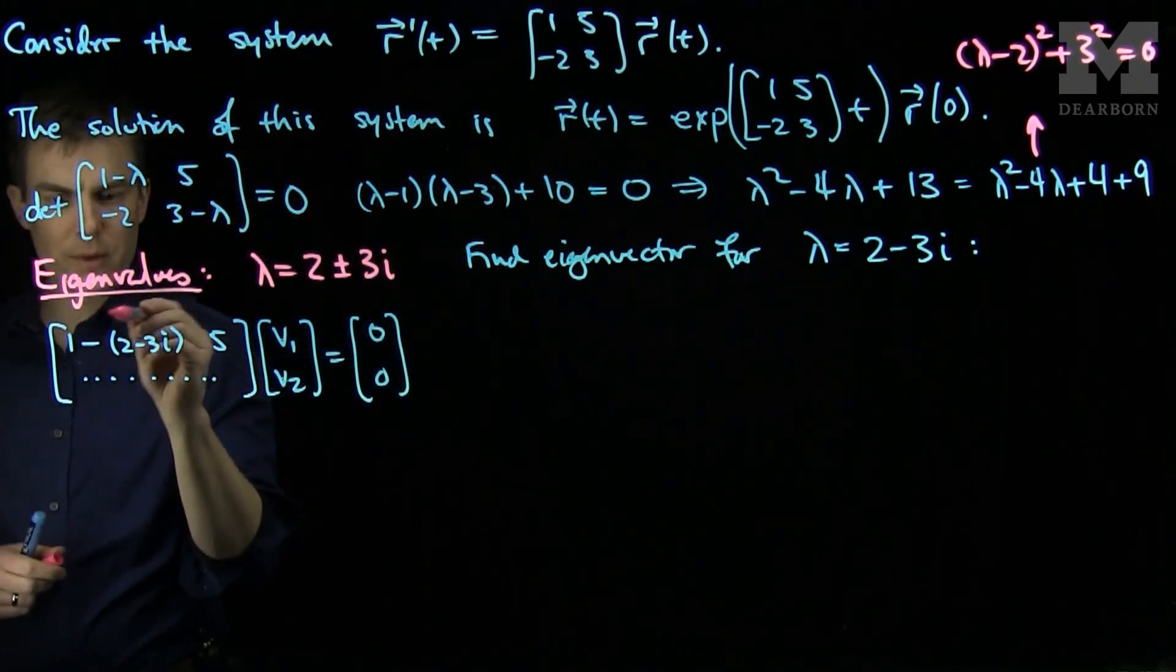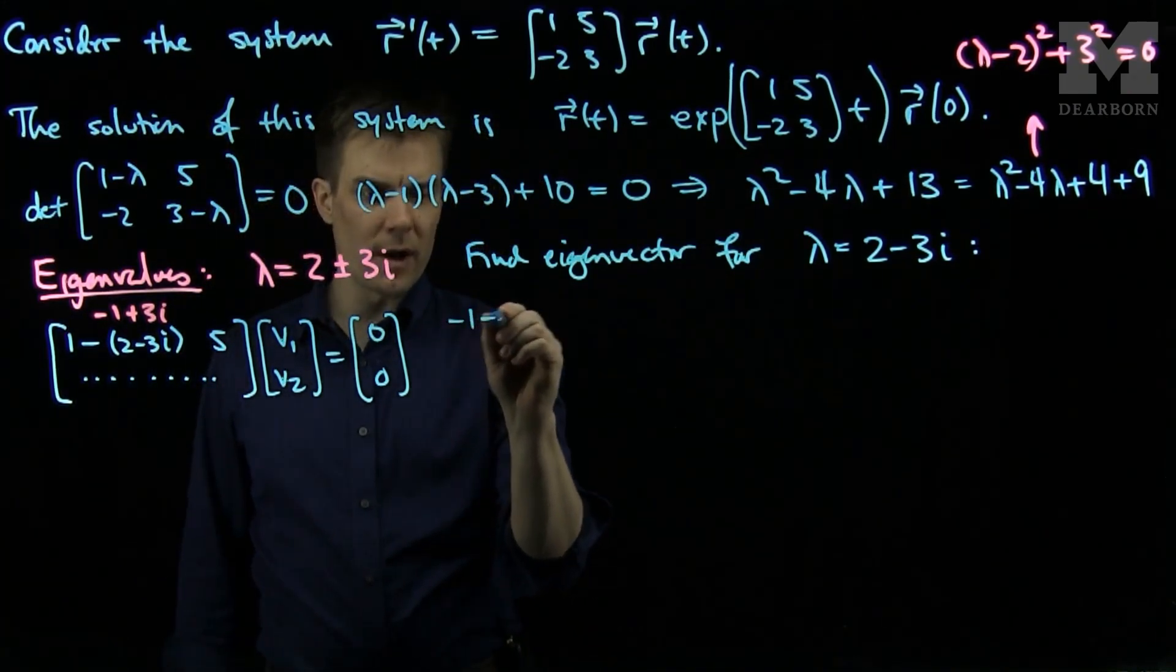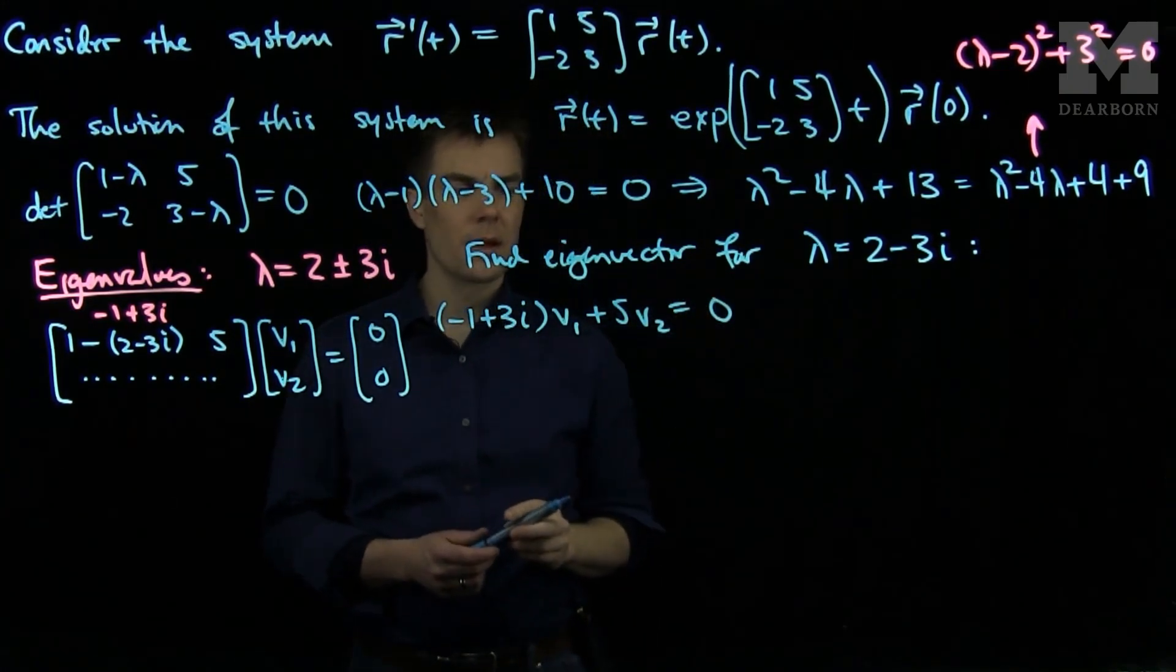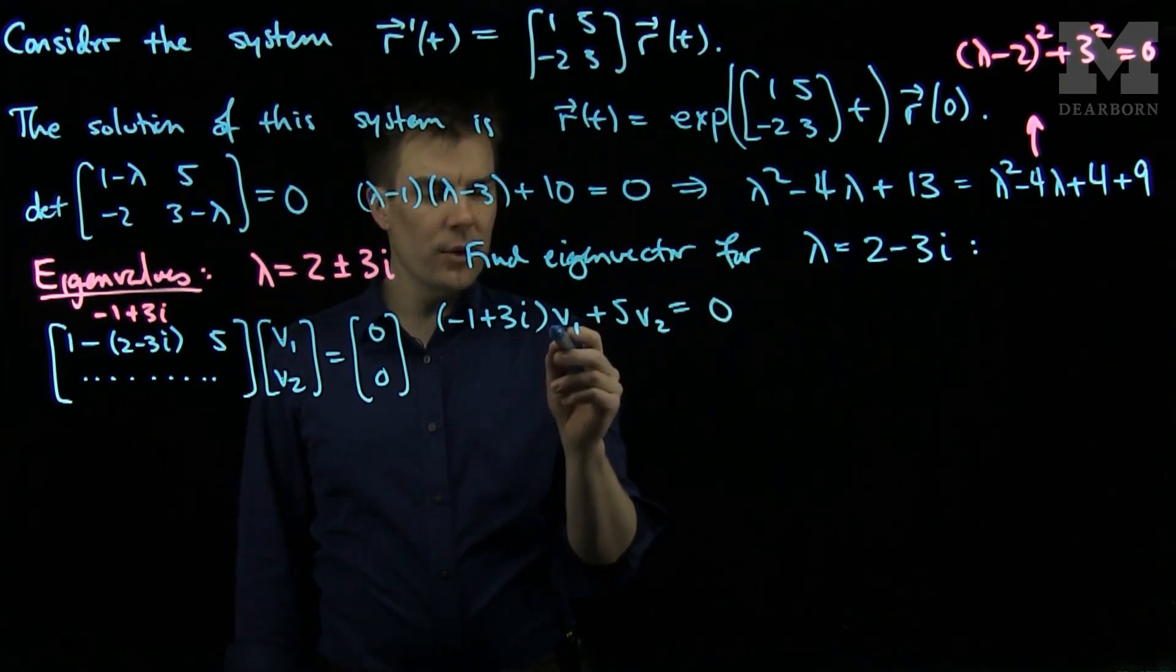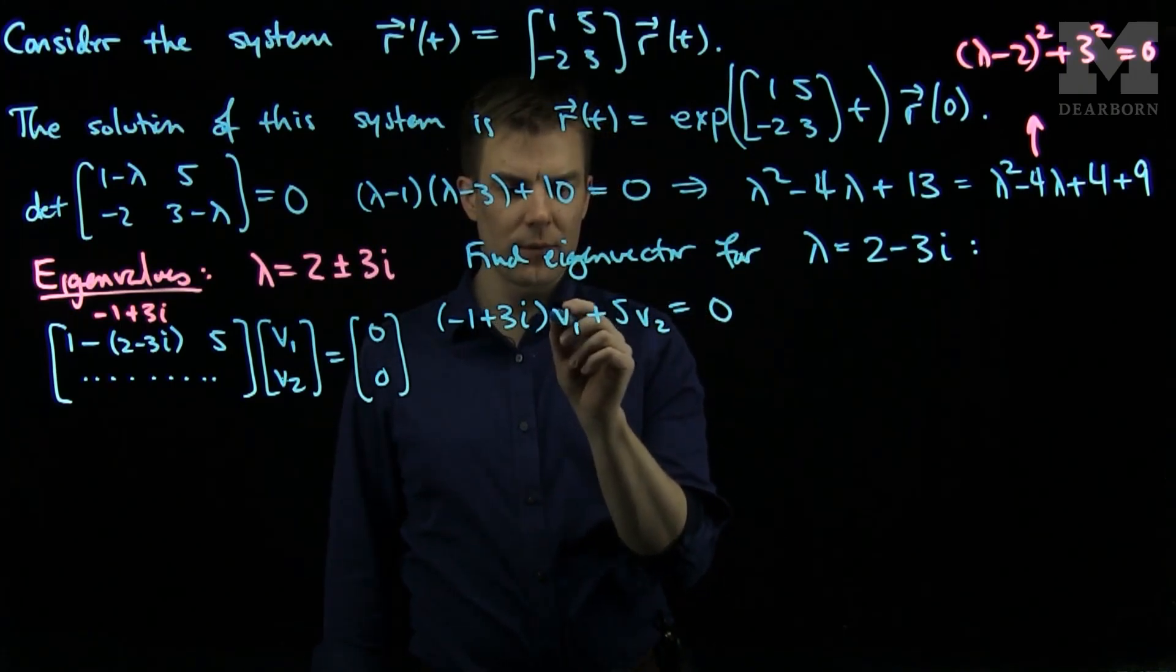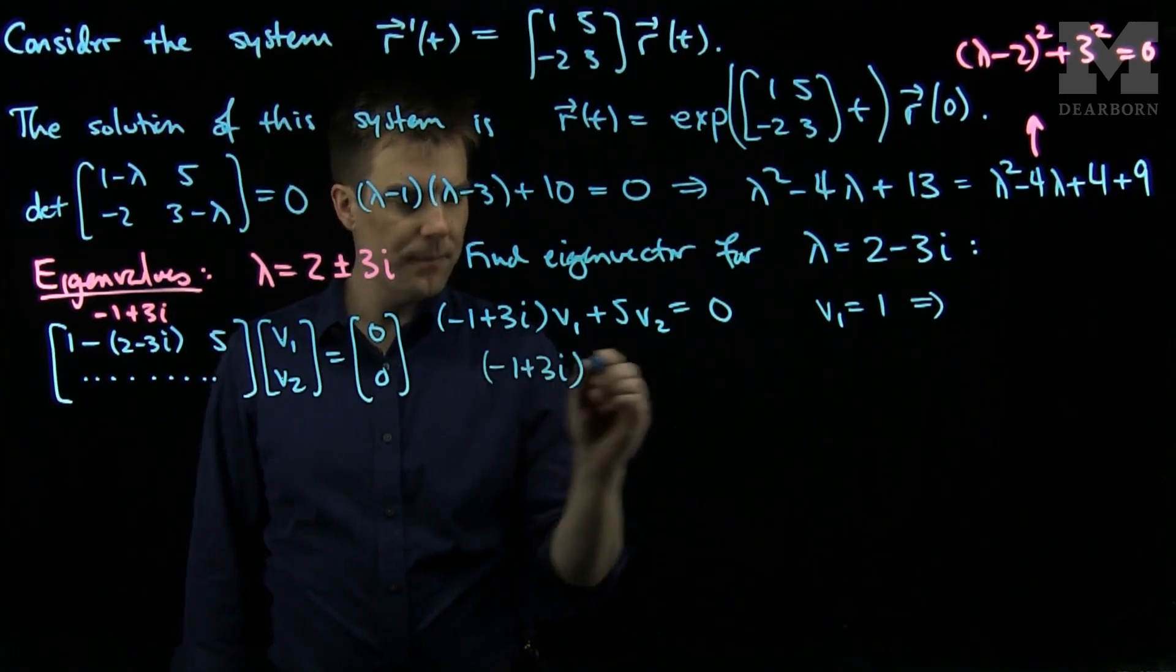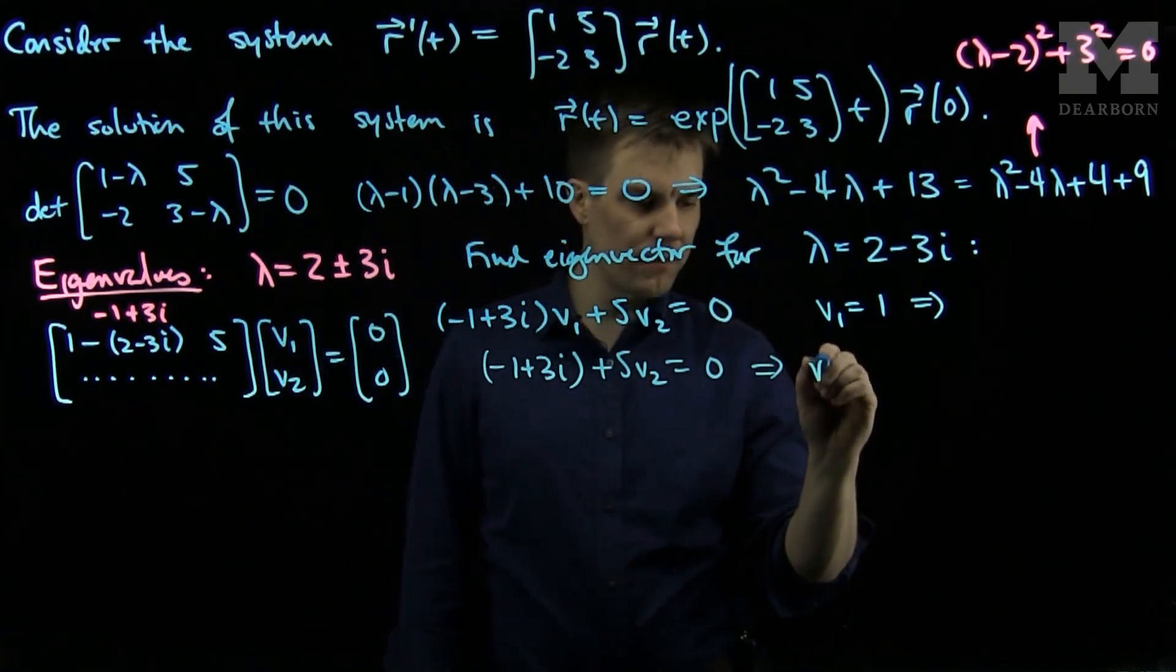The relationship simplifies. This term will be -1+3i. So we have (-1+3i)v₁ + 5v₂ = 0. We can make any choice of either v₁ or v₂ to simplify the problem. If we choose v₁ to be 1, that implies -1+3i + 5v₂ = 0.